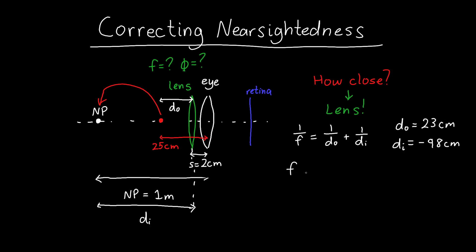And if you solve this equation for F, you'll find that F is equal to about 30 centimeters. And so this is our corrective lens focal length that we want to use.